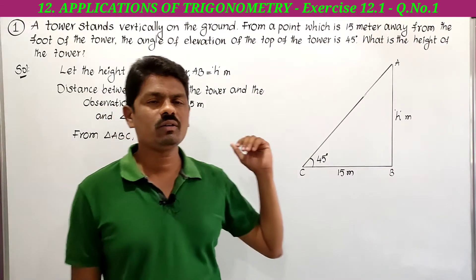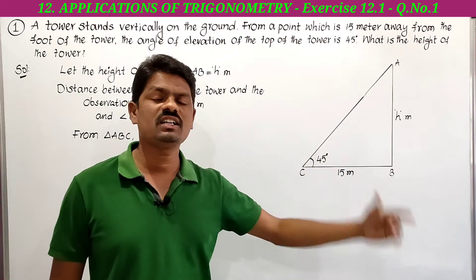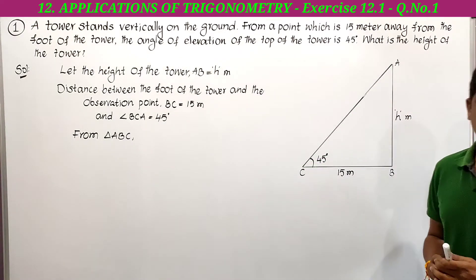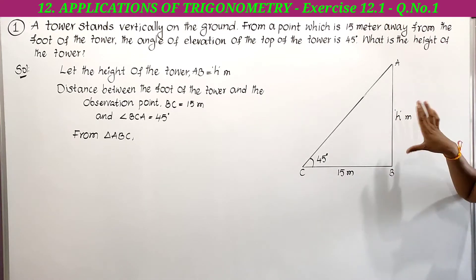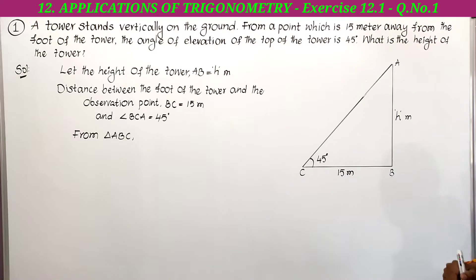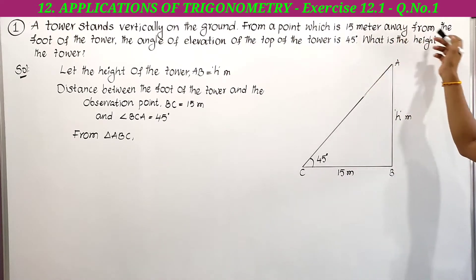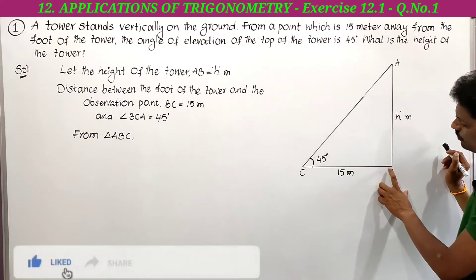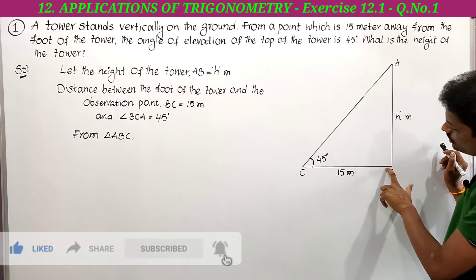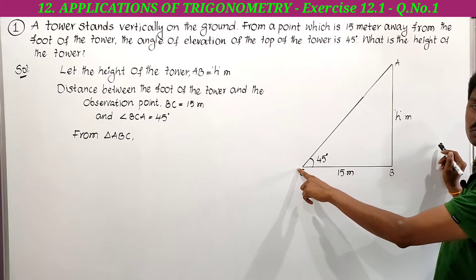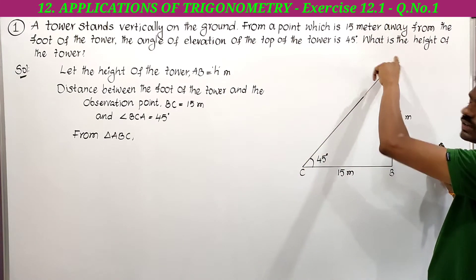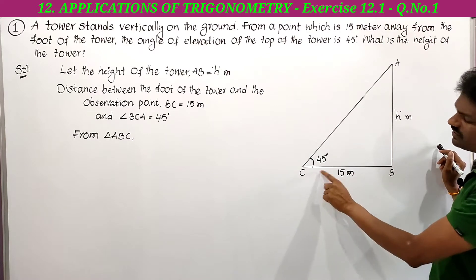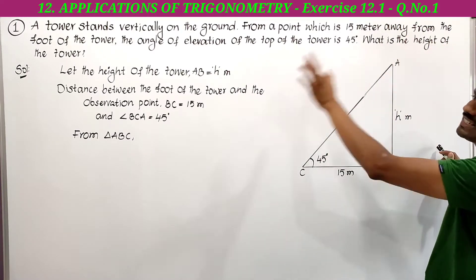First we have to draw the correct figure so we can easily solve the problem. The tower is vertical, so let AB be the tower. From a point which is 15 meters away from the foot of the tower, the angle of elevation of the top of the tower is 45 degrees. So angle BCA is 45 degrees.